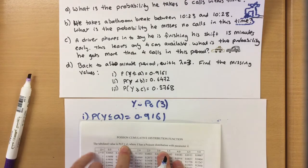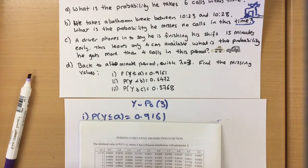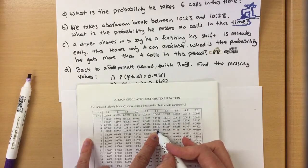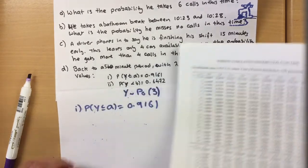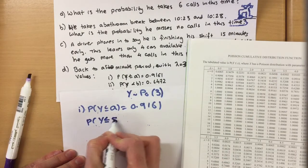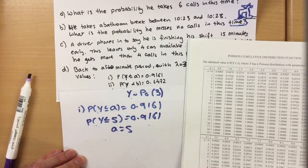So under three we've just got to find 0.9161 which is there. So our a value must have been 5. So probability that Y is less than or equal to 5 is 0.9161, therefore a is 5.